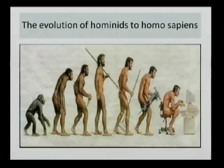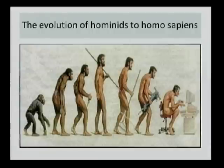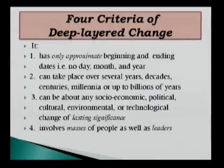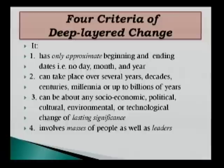And then, finally, of course, there's the millions of years that it took for hominids to develop into Homo sapiens — an important biological and social development. So, to summarize the four criteria of deep layer change: they only have approximate beginning and ending dates, with no day, month, or year assigned.